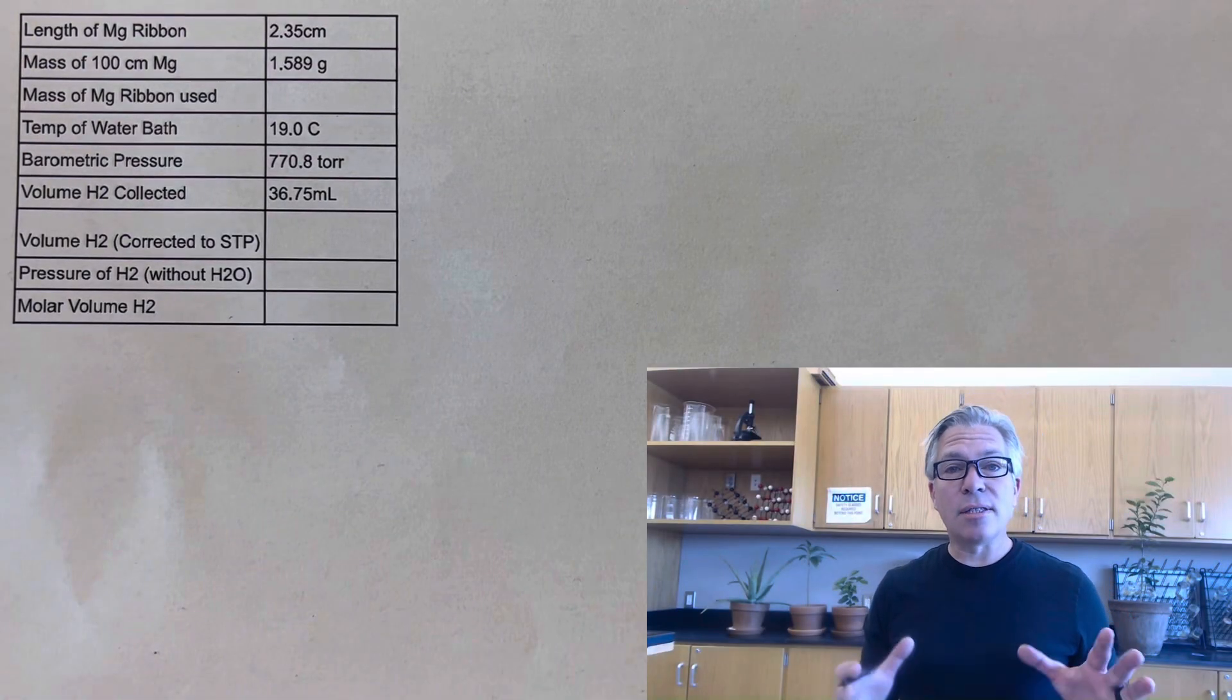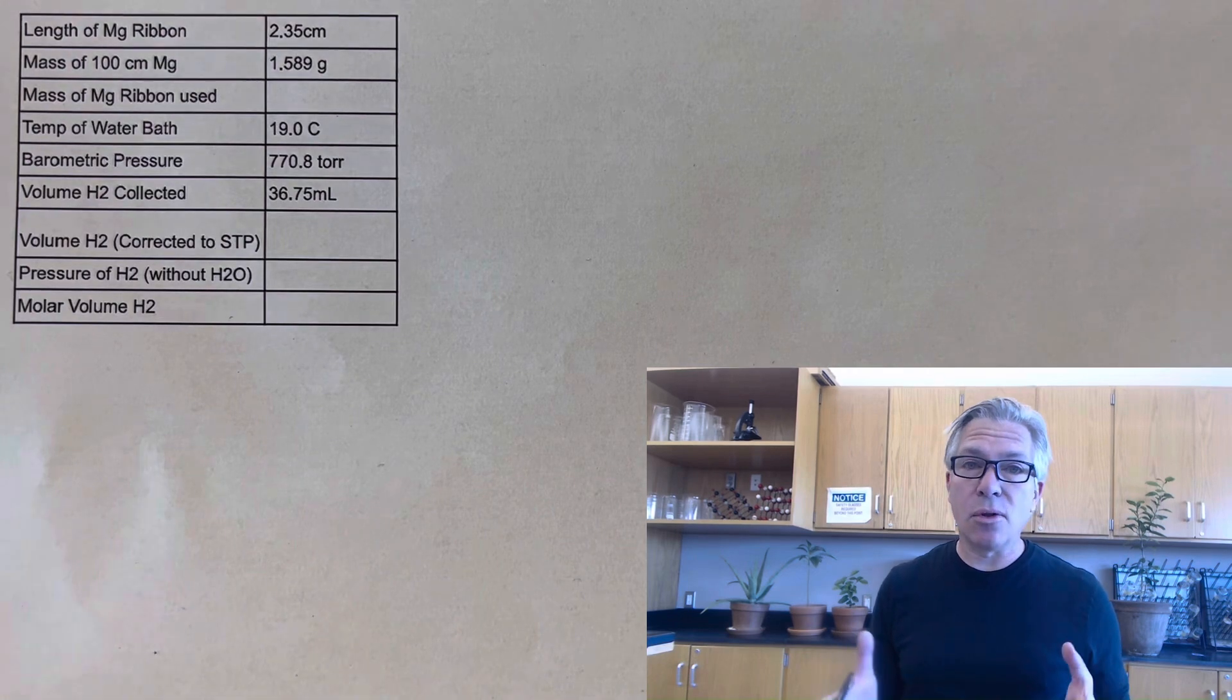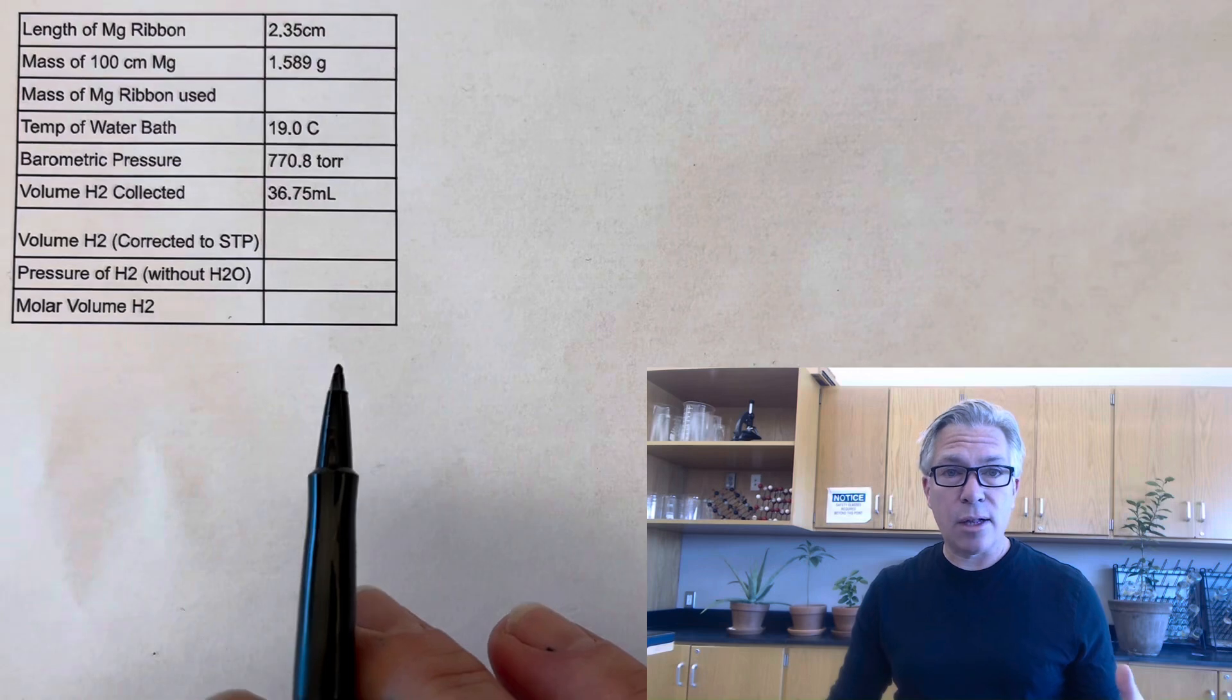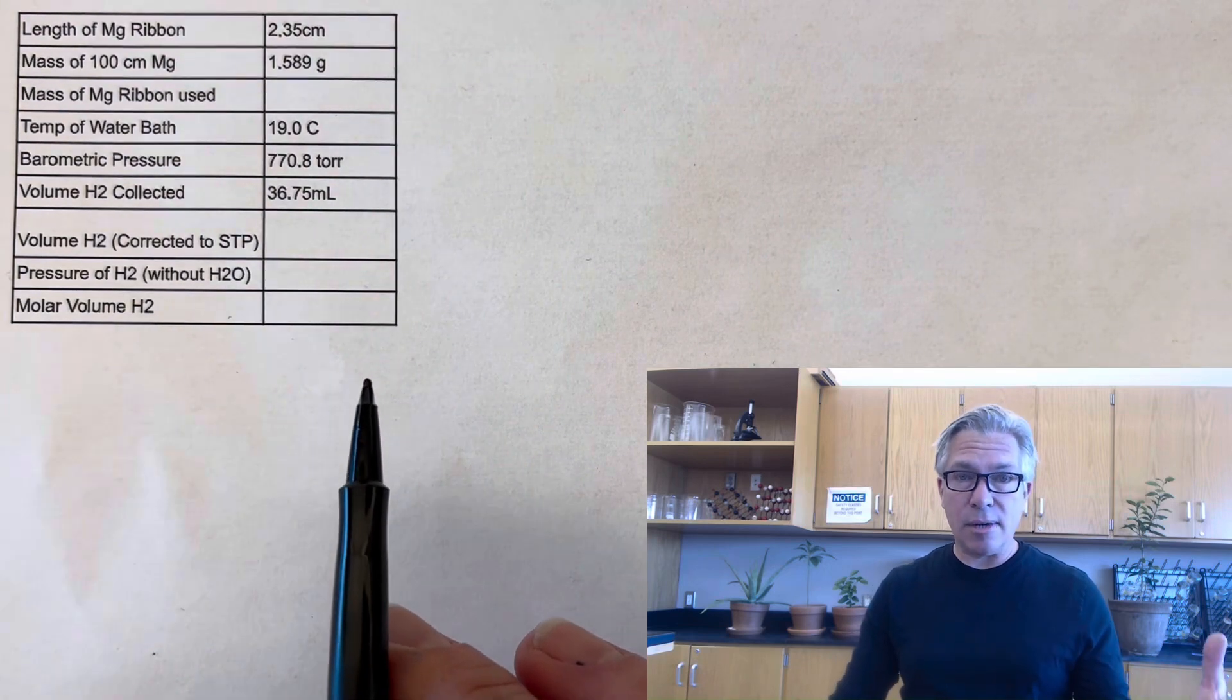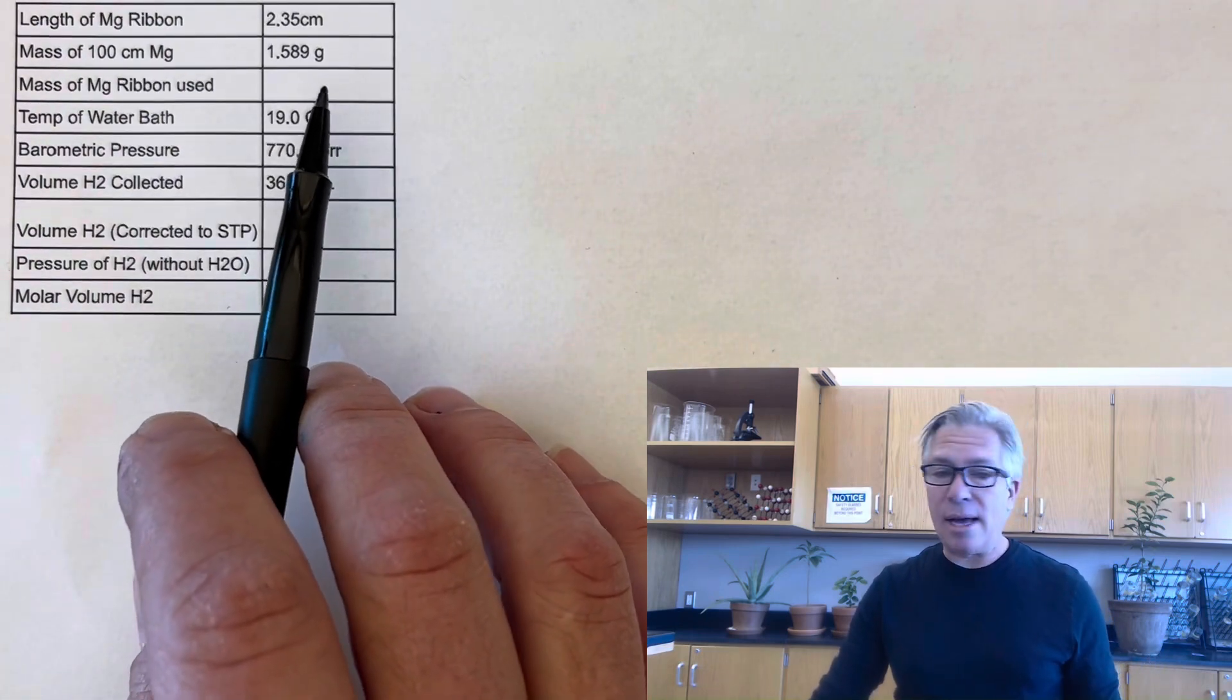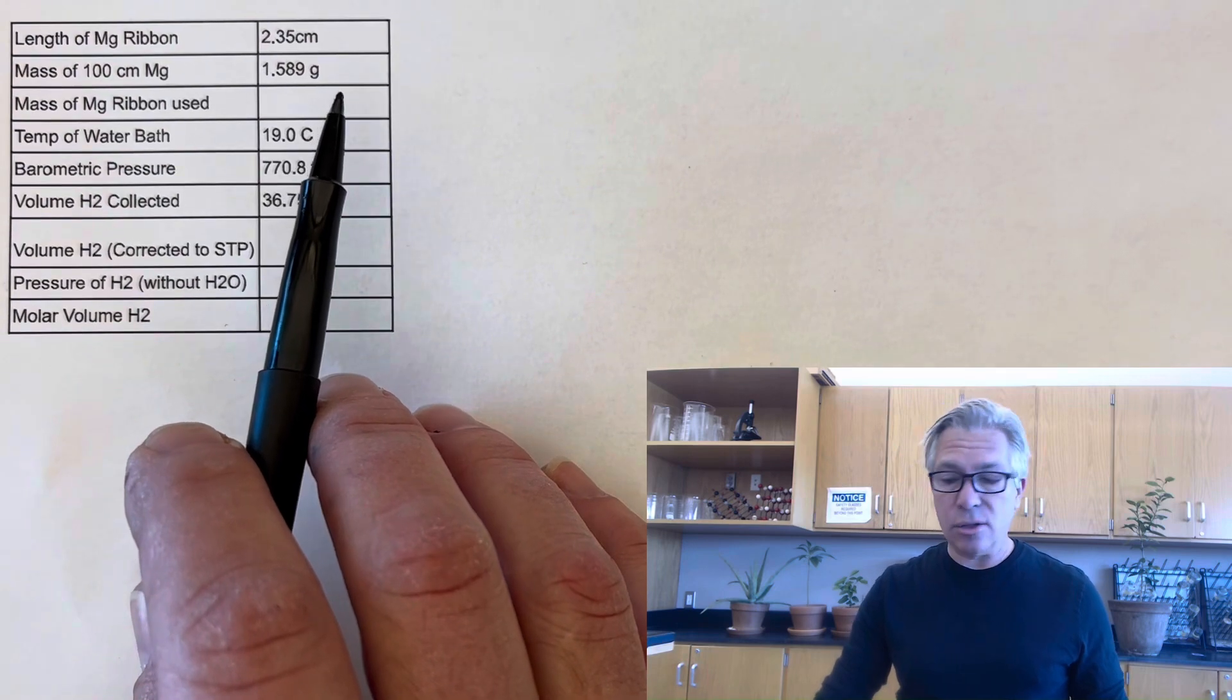Okay, so now it's time to do the calculations for this molar volume of hydrogen lab. There's going to be several steps. So just follow along. If you have a question, you can always email me or put it in the comments. And so I'm just going to jump right into it. Now, the first thing I want to do is to find the mass of the magnesium ribbon that I actually used. And remember, I measured out 100 centimeters of it.